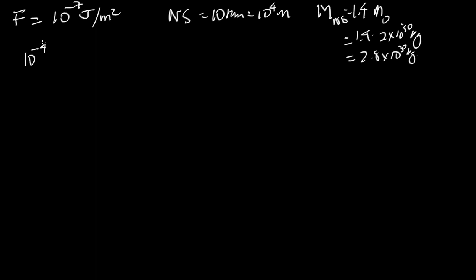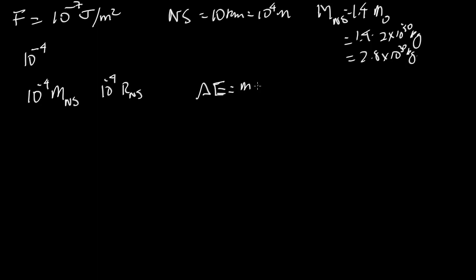We want to figure out how much energy that might release. We're going to move 10 to the minus 4 of the mass of the neutron star, and move it by 10 to the minus 4 of the radius of the neutron star. On Earth, we know that the change in potential energy is equal to the mass times the gravitational acceleration g times the height.